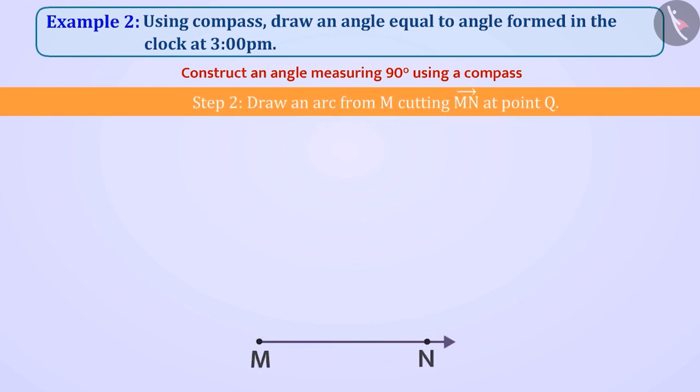Step 2. Now we will take the compass and place its pointed end on M. By taking a radius in the compass, we will draw an arc that cuts the beam MN at point Q.